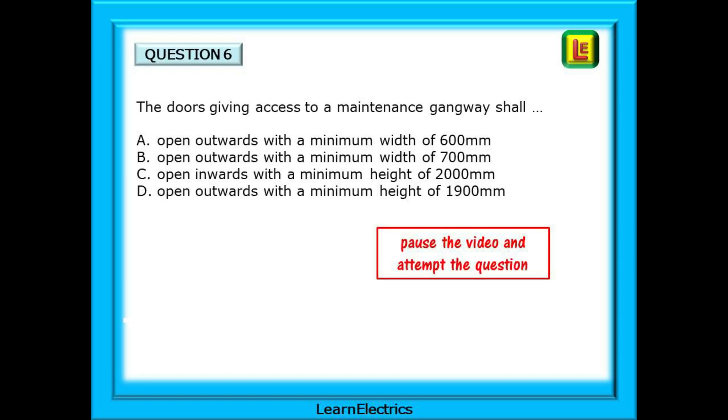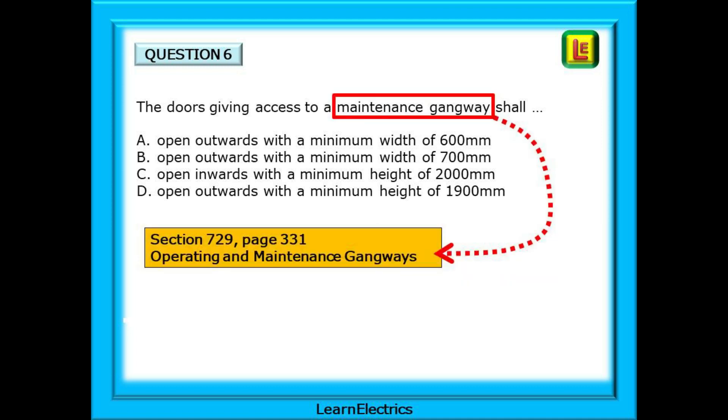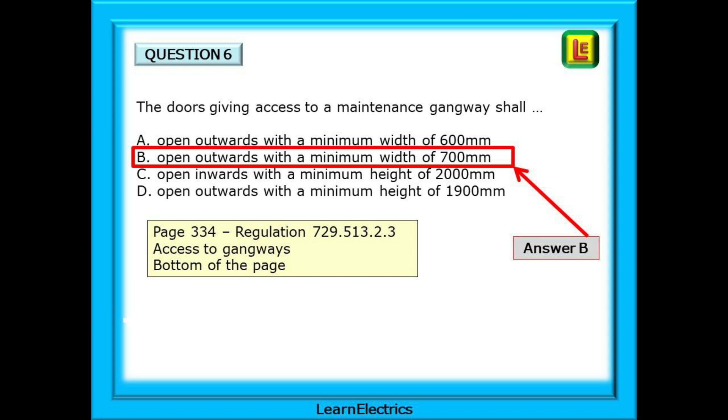Moving on to Question 6: The doors giving access to a maintenance gangway shall... and then 4 statements to complete the sentence. Pause the video and attempt this yourself. The clue is in the question: Maintenance gangway. And on page 3 we will find section 729, Operating and Maintenance Gangways. It is telling us to go to page 331 so let's do that. Within the pages of section 729 we come across page 334 and Regulation 729.513.2.3 which talks about access to gangways as mentioned in the question. At the bottom of page 334 we will find our answer. The only one that matches the book is answer B. Doors giving access to maintenance gangways shall open outwards with a minimum width of 700 millimetres. Answer B.